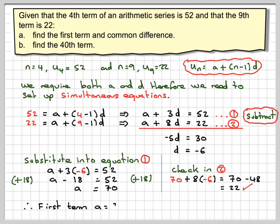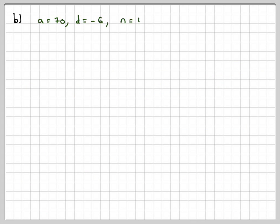So therefore, we can say that the first term a = 70, and the common difference d = -6. And we can now use that to find the 40th term. So we've got a = 70, d = -6, n = 40, and we need to find the 40th term.